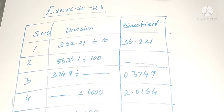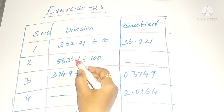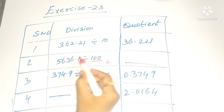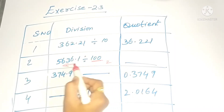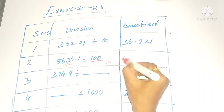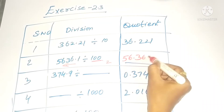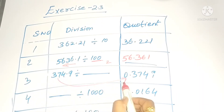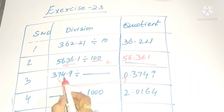See the second one: 5636.1 divided by 100. Whenever we divide with 100, the decimal point moves towards the left side. There are two zeros, so the decimal point moves two digits to the left side, so it will be 56.361.